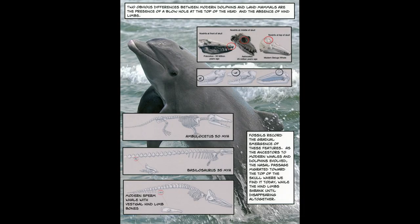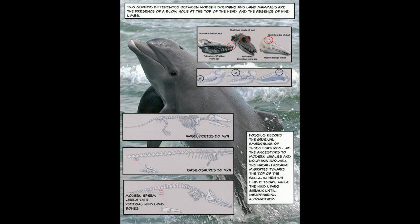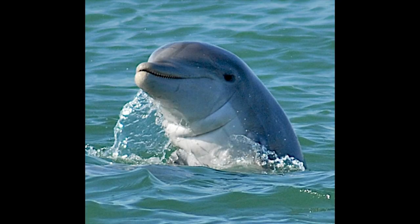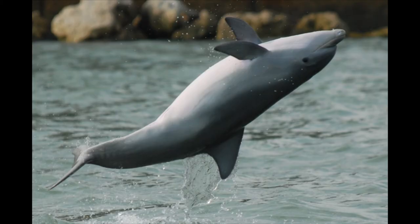Now let's take a look at the photos on the bottom left. The top photo shows an ancestor that still has its hind limbs — this was 50 million years ago. The picture under that is the Basilosaurus we mentioned from 35 million years ago, and it has very small hind limbs. And the photo on the bottom is the modern sperm whale with vestigial hind limb bones still present. Fossils recorded the gradual emergence of these features. As the ancestors to modern whales and dolphins evolved, the nasal passage migrated toward the top of the skull, while the hind limbs shrank until disappearing altogether.